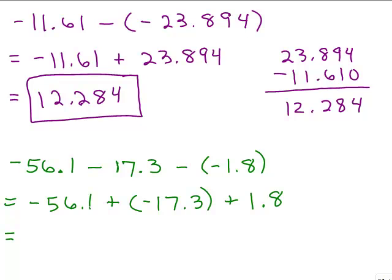So next step. We have two negative numbers and one positive number. So I like to add the two negative numbers first. When you add two negatives, you know there's going to be a negative and we're going to be adding that 1.8 to whatever we get here. So we need to go over on the right and add. These are like signs so you just add the 56.1 and the 17.3. So that gives you 73.4.